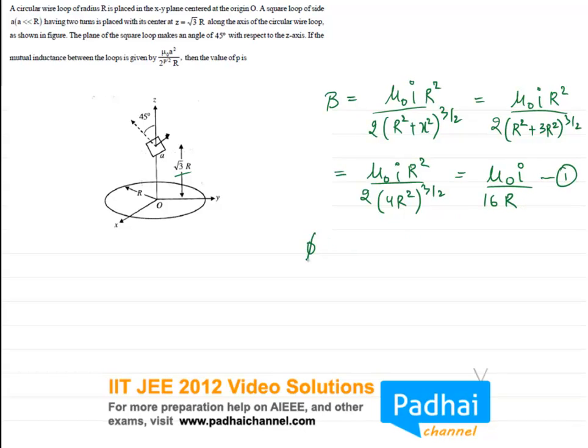Now, flux phi is given by n into B into A. This is also equals to m into i, mutual inductance into i. Now, it is saying that it is having 2 turns, that means n will be equals to 2.